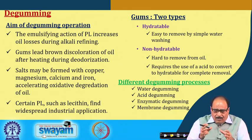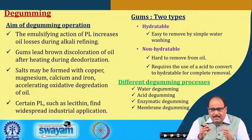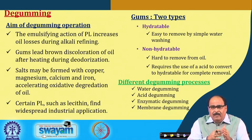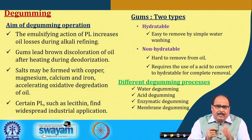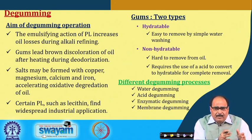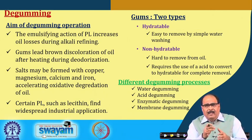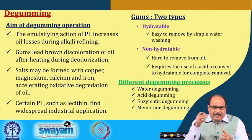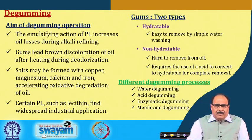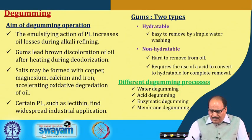Different degumming processes include water degumming, acid degumming, enzyme degumming, and membrane degumming. Simple washing with water, adding acid or enzyme solution, or even membrane separation processes can be used for degumming of the oil.